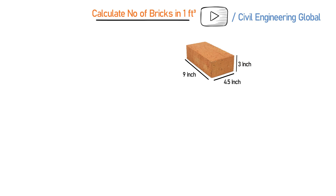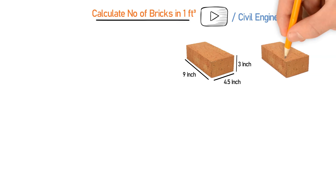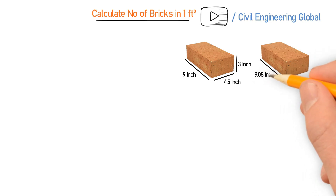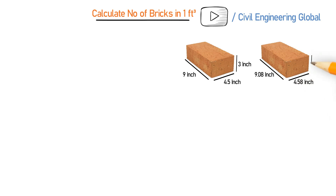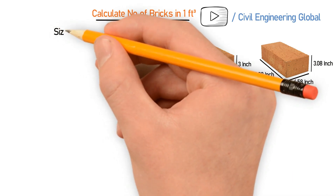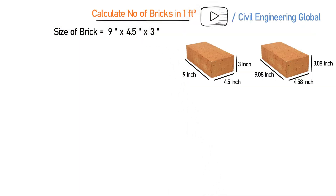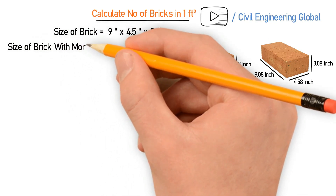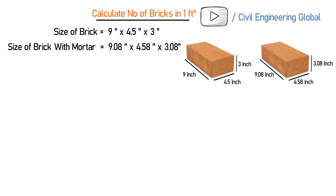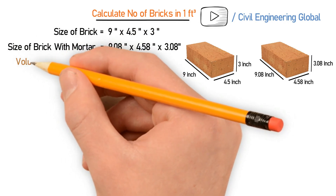This is the standard size of a brick. Now let's add mortar to the brick. After adding 0.5 inch mortar, the length of the brick will become 9.5 inches, the breadth will become 4.58 inches, and the height will become 3.5 inches. So the size of the brick with mortar is 9.5 inch × 4.58 inch × 3.5 inch.